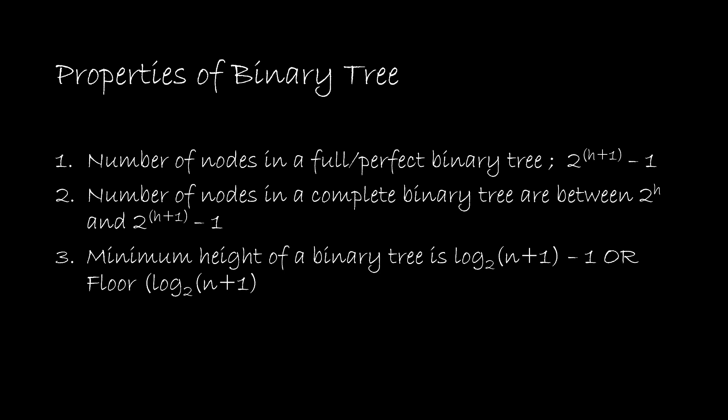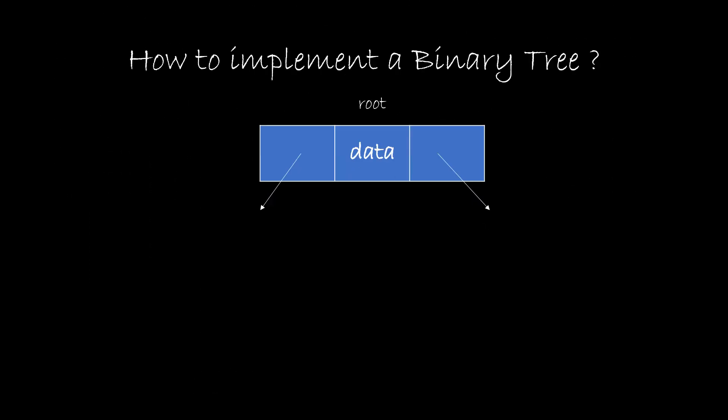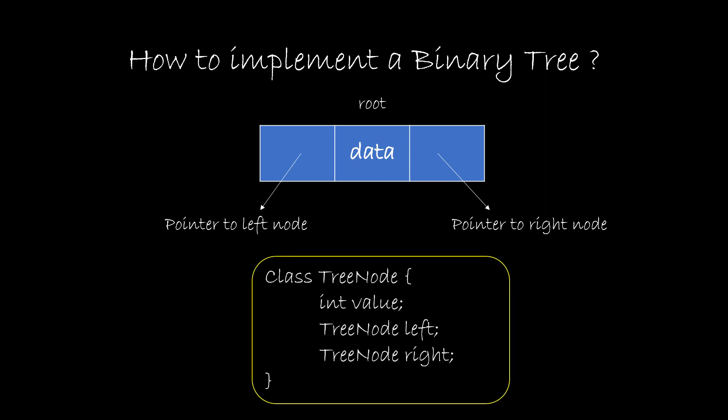Now that we have a basic idea of a binary tree, let's see how to represent it. Any node in a binary tree has three things: the data, and two pointers that point to the left child and the right child respectively. In Java, a tree node can be represented as a class, or a structure in C. This class or structure has three attributes: the value of the node, and references to the left and right node.